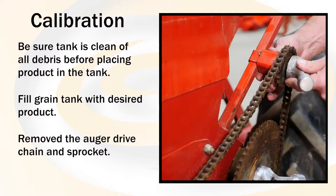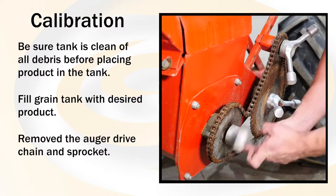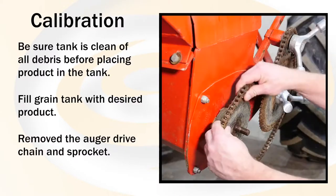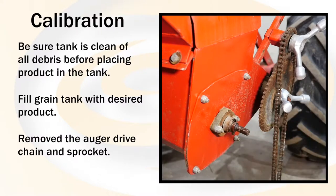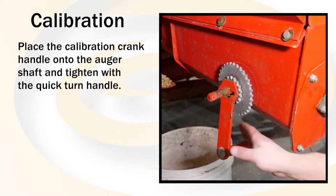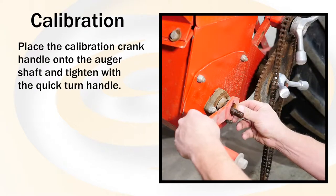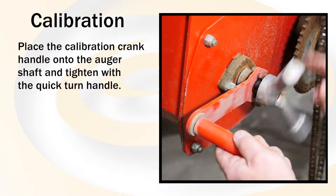Remove the auger drive chain and sprocket. Place the calibration crank handle onto the auger shaft and tighten with a quick turn handle.